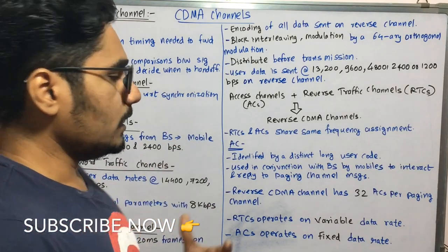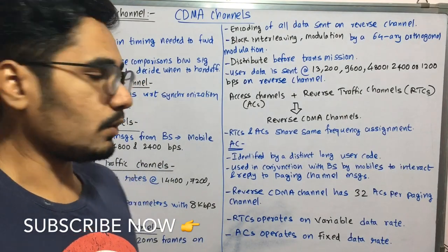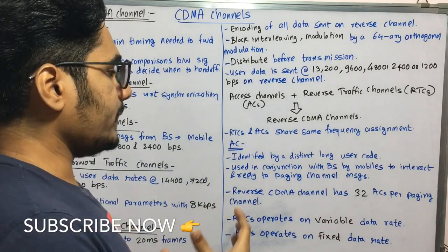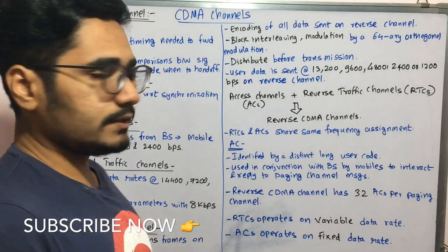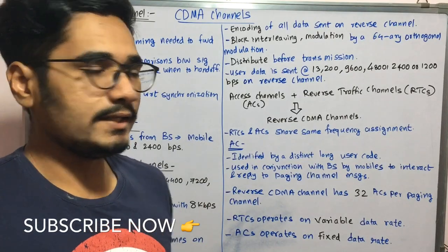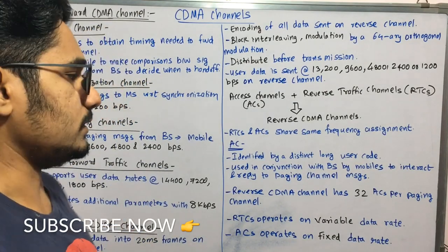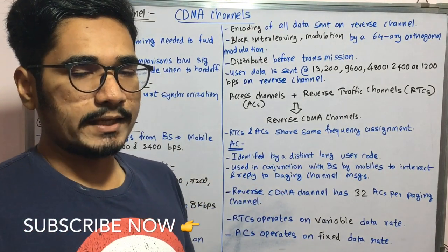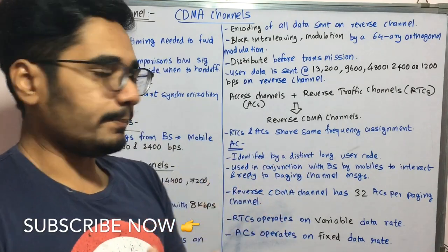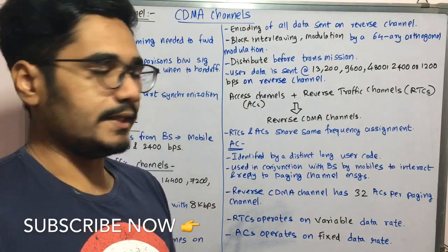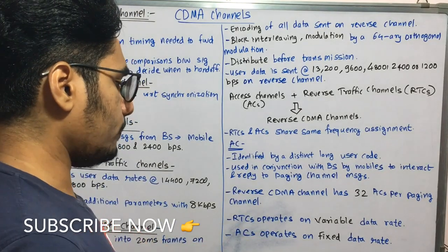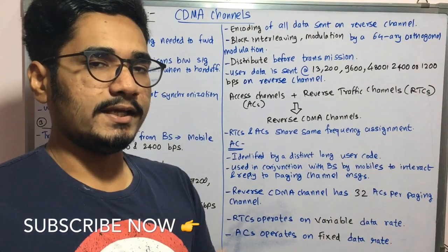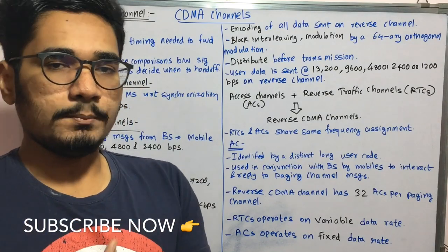The access channel is identified by a long distinct user code. It is used in conjunction with the base station by mobiles to interact and reply to paging channel messages. The reverse CDMA channel has 32 ACs per paging channel. RTCs operate on variable data rates, whereas ACs operate at a fixed data rate at any given point in time.